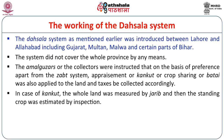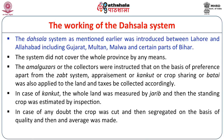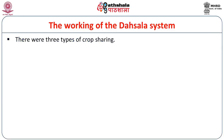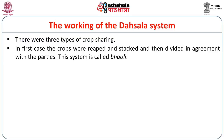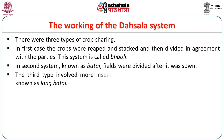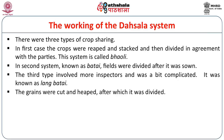In case of kaankut, the whole land was measured by jarib and then the standing crop was estimated by inspection. In case of doubt, the crop was cut and segregated on the basis of quality and an average calculation was made. There were three types of crop sharing. In the first case, the crops were reaped, stacked, and then divided by agreement of the parties — this system is called bhaoli. In the second system known as batai, the fields were divided after sowing. The third type, known as langbatai, involved more inspectors and was more complicated — the grains were cut, heaped, and then divided.